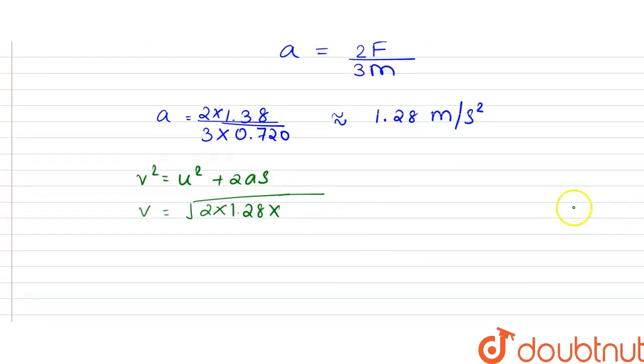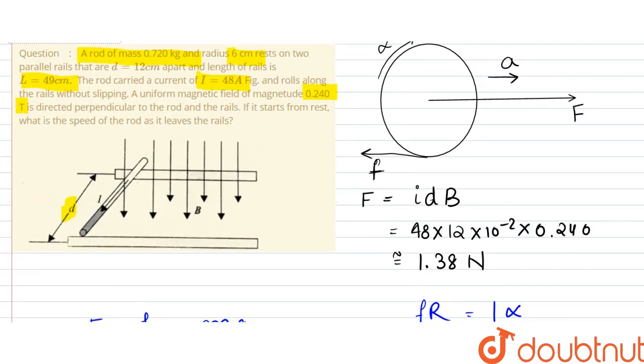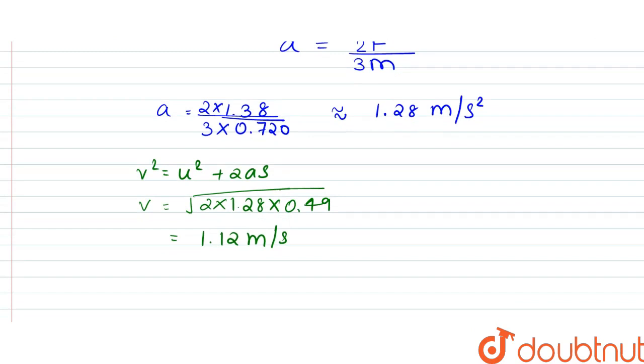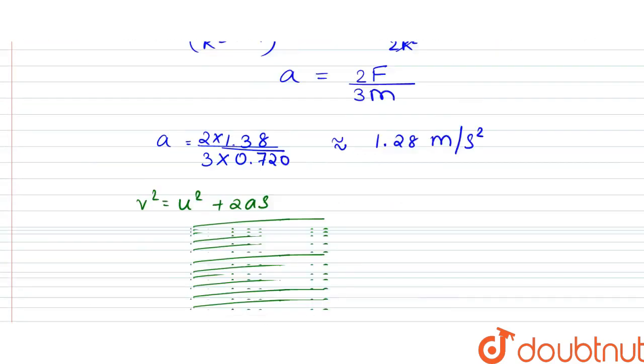This is the velocity of the rod. So this is our answer - the velocity when it leaves the rails.